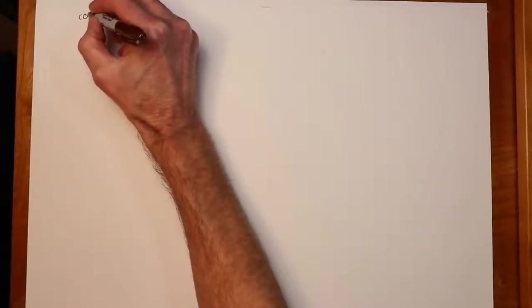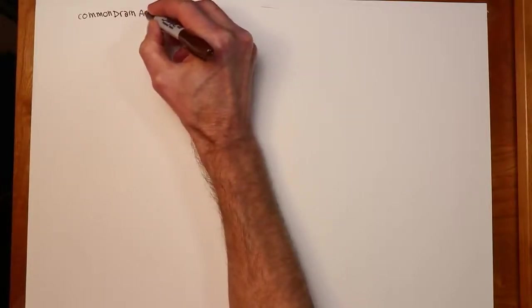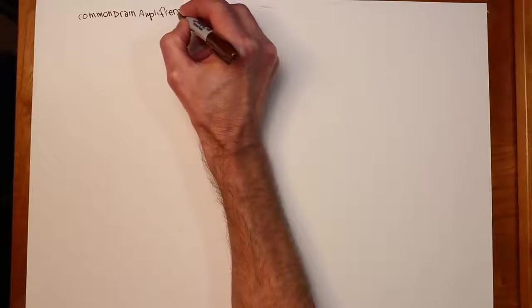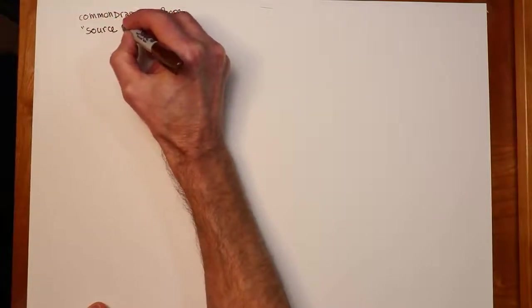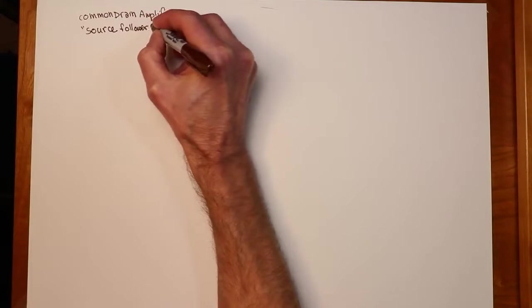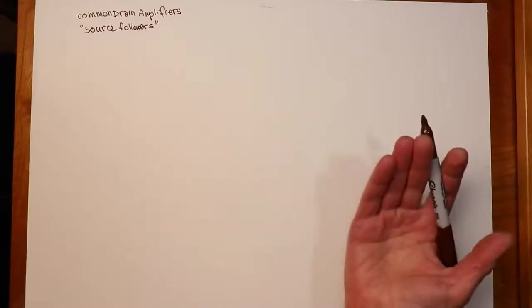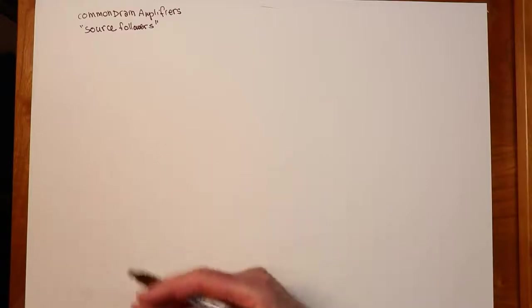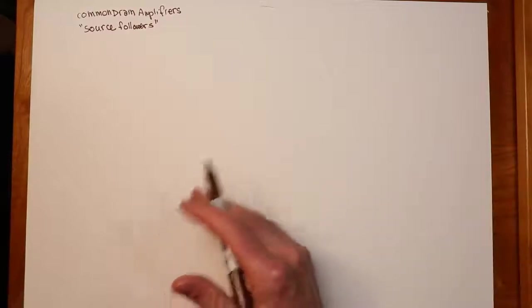Welcome back folks. Today's topic is common drain JFET amplifiers. Common drain amplifiers fall into that class of circuits that we call followers. So a common drain amplifier would also be known as a source follower. Followers in general have a common set of characteristics: they have a gain of ideally one, that's usually a little bit less but ideally one, very high input impedance, very low output impedance, low distortion, non-inverting.